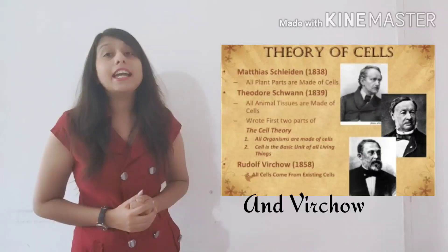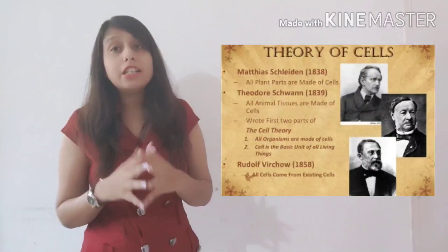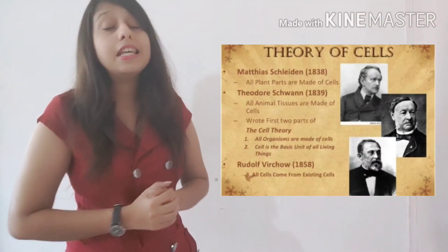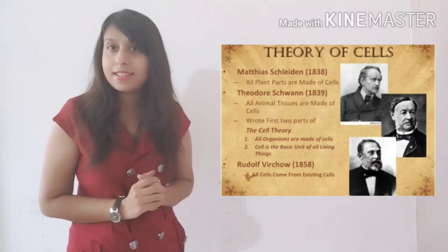Then in 1839, two German scientists named Leiden and Schwann gave the cell theory which states that the structural and functional unit of all living organisms are cells, and cells arise from pre-existing cells, that is through cell division.